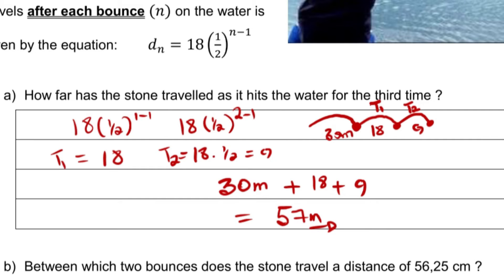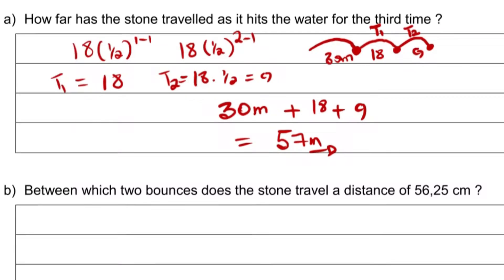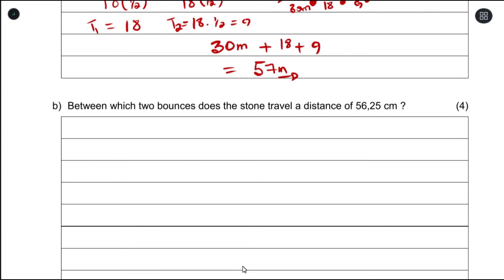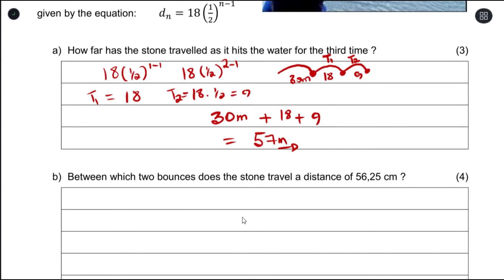Then let's get to b. Part b says between which two bounces does the stone travel a distance of 56.25 cm. Before we go into the calculation, one thing you need to understand is d_1 is between the first bounce and the second bounce, d_2 is between the second bounce and the third bounce, and so on. So if I get whatever value, that will give me an idea of between which bounces it's going to be.